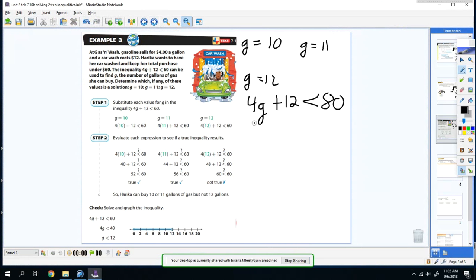So the first one I'm going to plug in is 10. So you're going to say 4 times 10 plus 12 is less than 60. So now you just solve it. So 4 times 10 is 40. Plus 12 is 52. So now you ask yourself, is 52 less than 60? And I don't know why I wrote 80. That's supposed to be a 60, guys. Sorry.